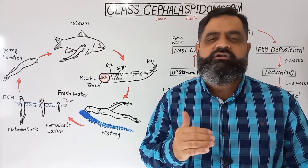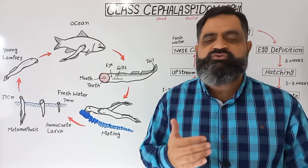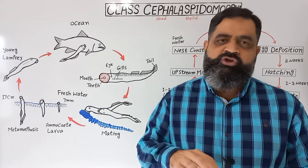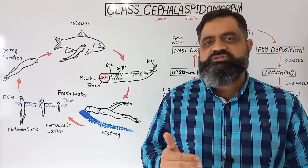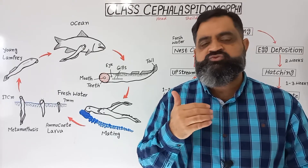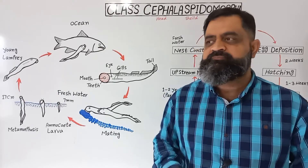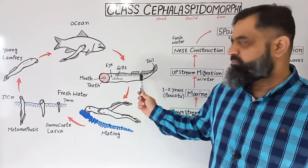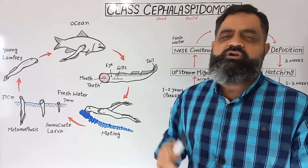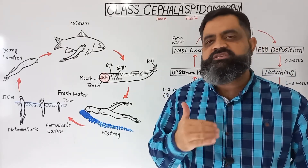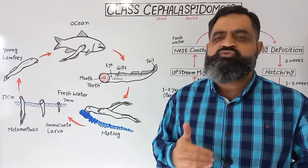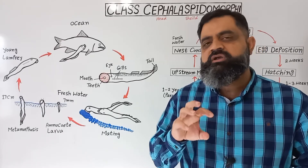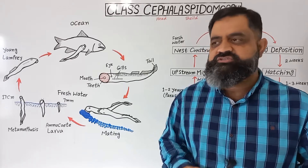After completing their parasitic life, they start swimming towards fresh water. As you know, all rivers fall into an ocean, so they move out from the salt water and start swimming towards fresh water. Male and female fish both start to swim upstream in the river, against the flow, and they keep swimming until they reach the shallow water of the river where water is shallow and very fast.